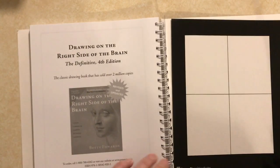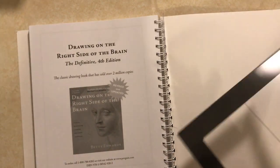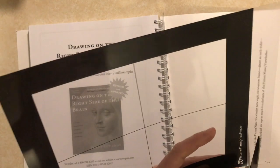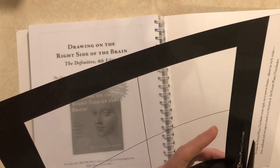But if you don't have the workbook, you can find another piece of clear plastic, or even a piece of glass, like from a picture frame, and you can use that.